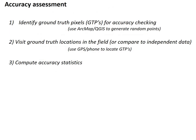There are really three steps to accuracy assessment. One is to identify ground truth pixels, or GTPs. These are places where you're going to pick a random point on your map and then check to see if it is correctly classified. Both ArcMap and QGIS have options to generate these points. Once you've generated your GTPs, you're going to visit the locations in the field and actually see if it's correct, or you might just compare it to independent data, perhaps high resolution imagery in a few places where you have high res imagery available.